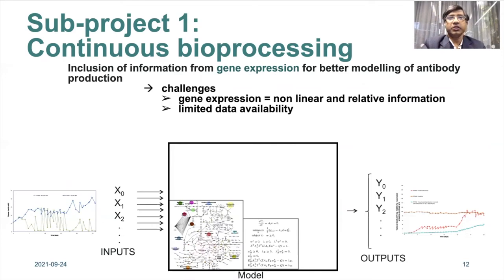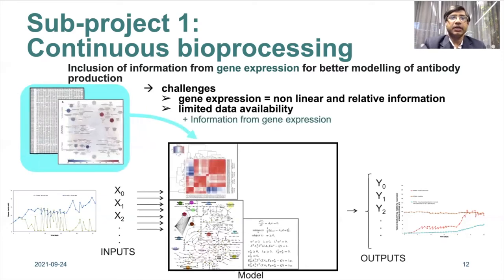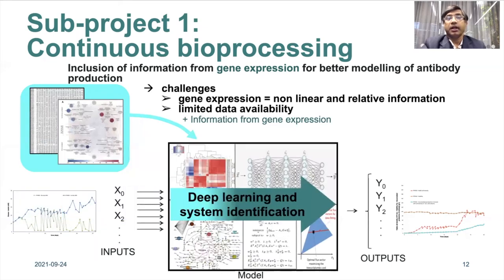In the continuous bioprocessing sub-project, we would like to include information from gene expression. The overall system is highly non-linear and we have very limited data availability. We would like to use model-driven deep learning systems and system identification to capture information from inputs and obtain relevant outputs.